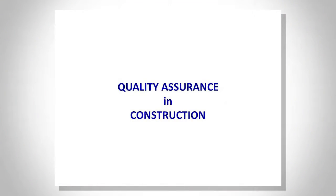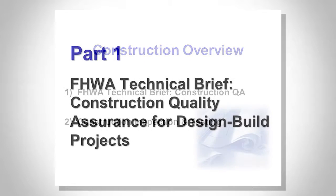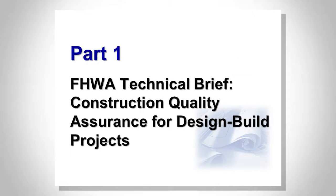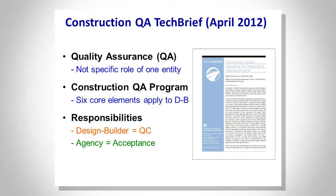Let's start getting into QA for construction. We'll talk about the QA tech brief from Federal Highways and then a little more on inspection and testing. We do have a Federal Highways tech brief on construction that was written about five or six years ago. We wrote this in coordination with our Turner Fairbanks group, trying to bring attention to QA requirements as well as how it could be written into the design-build contract.